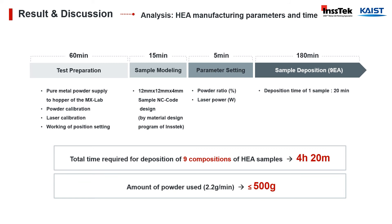For making the nine different high-entropy alloy specimens, we tracked each step to measure the time needed for manufacturing the samples. 16 minutes were required to set the stacking conditions used for the new alloy, about 20 minutes to define the sample modeling and parameter settings. And after obtaining the ANSI file, it took 180 minutes to stack the nine specimens with the MX Lab. In only 4 hours and 20 minutes, we produced the entire batch of samples with different types of high-entropy alloys from powder preparation to final prints, with a total amount of powder used around 500 grams based on 2.3 grams per minute during deposition for the entire experiment.